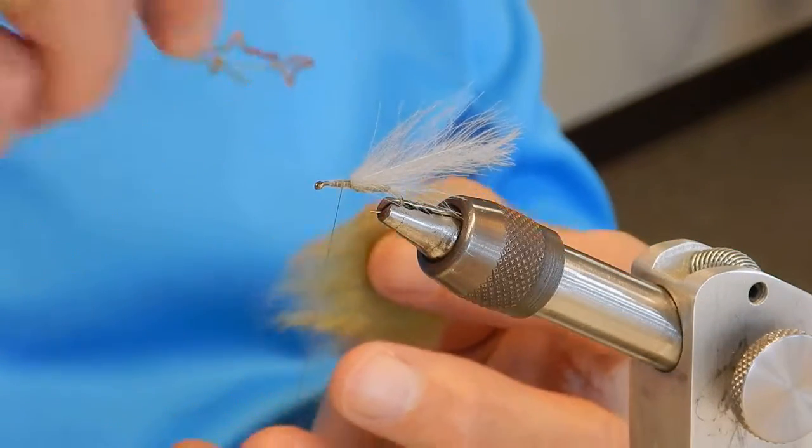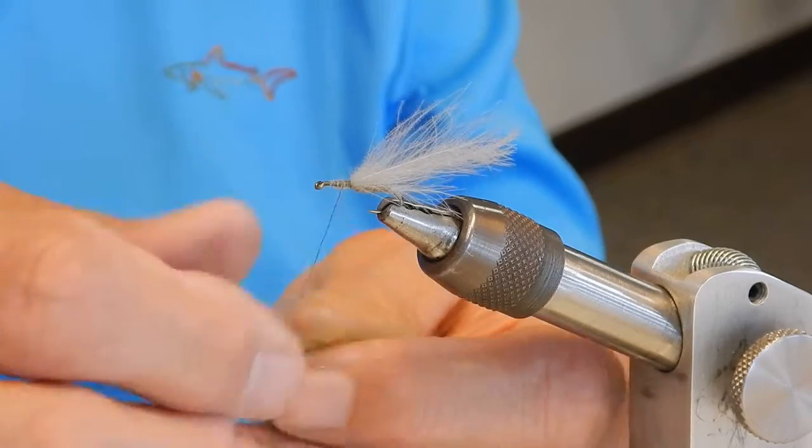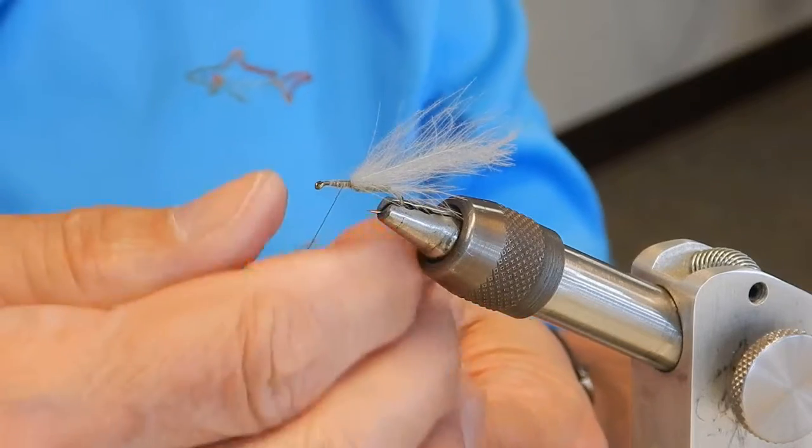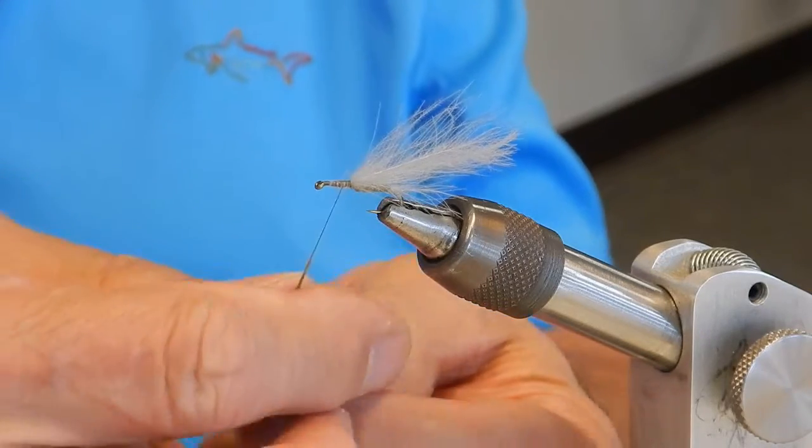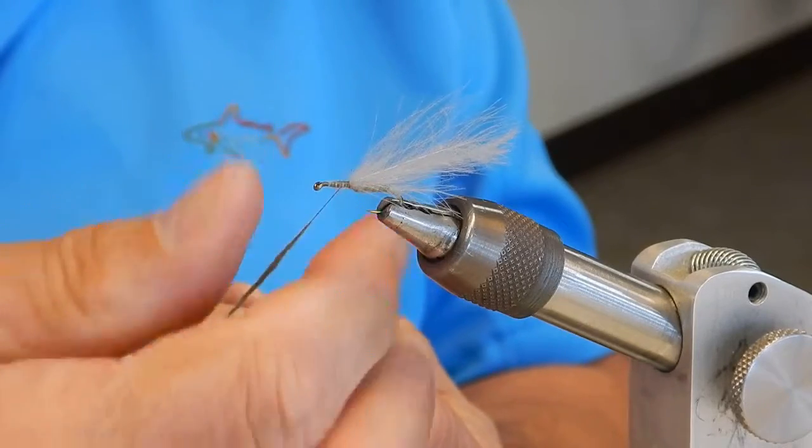Okay, now we're going to dub the thorax so it's a little bit bigger and bulgier, just like the real fly. I don't mean the thorax, I mean the abdomen. Nope, thorax. I had it right the first time. I should stick to my guns.